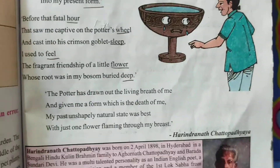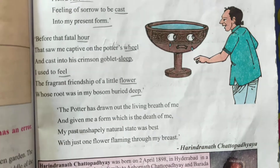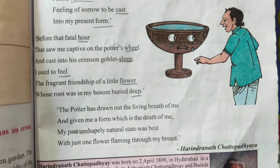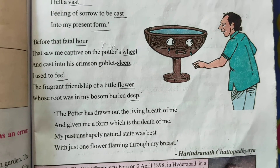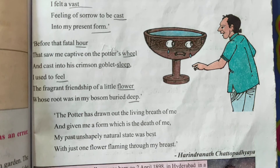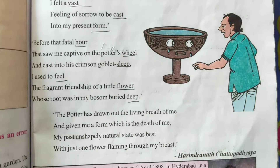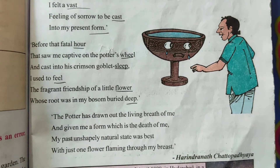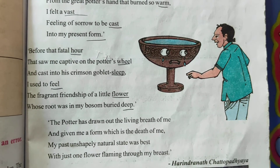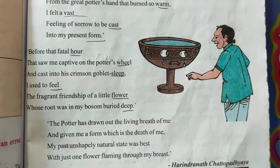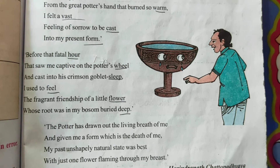The third stanza: 'Before that fatal hour that saw me captive on the potter's wheel and cast into his crimson goblet, I used to feel the fragrant friendship of a little flower whose root was in my bosom buried deep.' 'Fatal' means leading to death. Before the fatal hour — before being fully formed and burned — it was captivated on the potter's wheel. 'Crimson' is a dark or bluish red color.